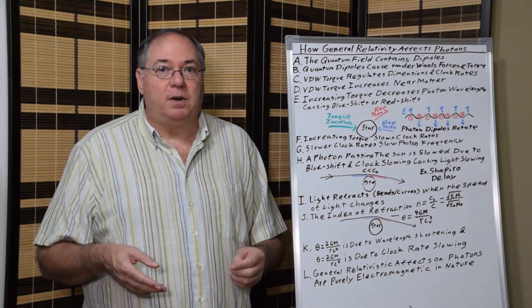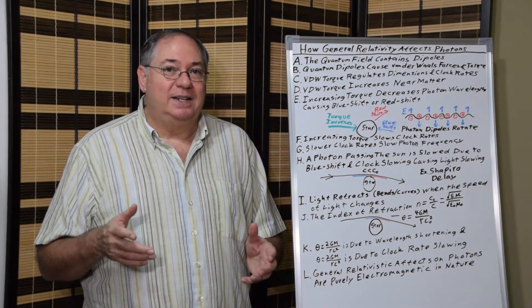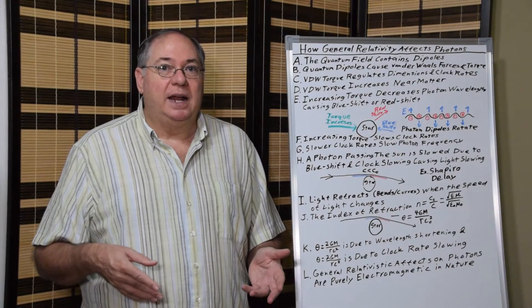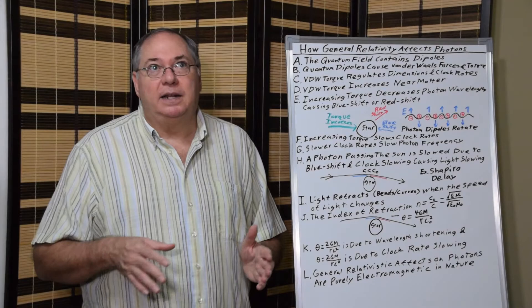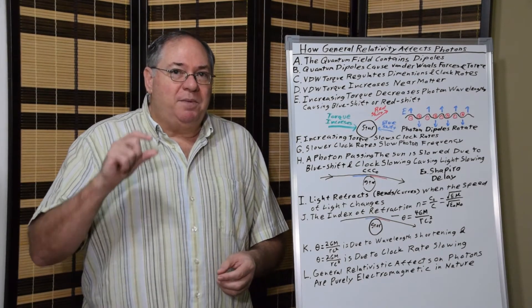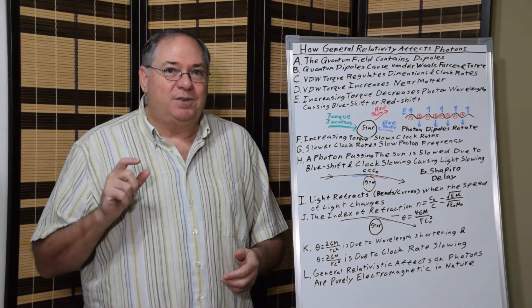But what Einstein forgot to do is consider both length contraction and clock slowing when he was looking at an electromagnetic theory of general relativity in the 1907 to 1912 time frame. So Einstein was this close to doing general relativity properly, and he screwed it up.